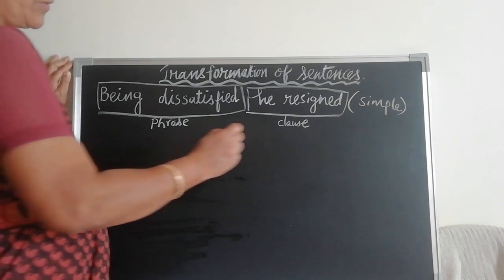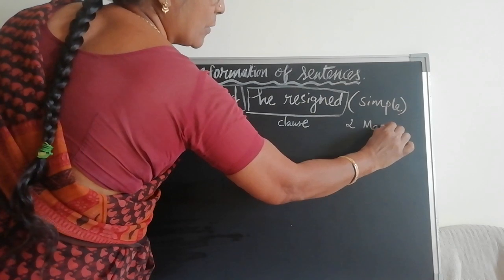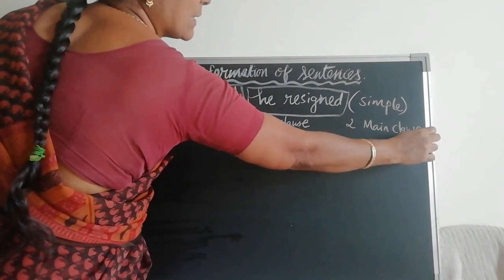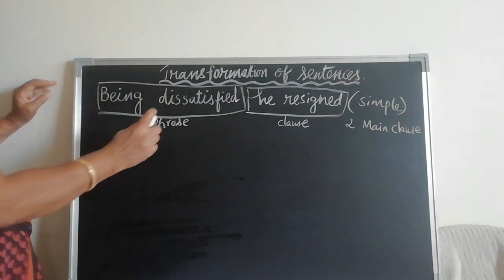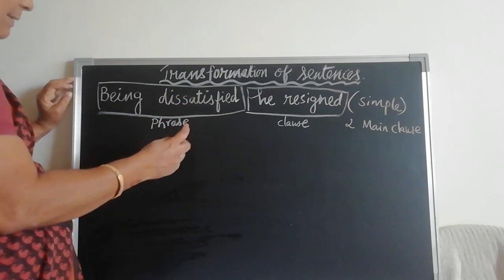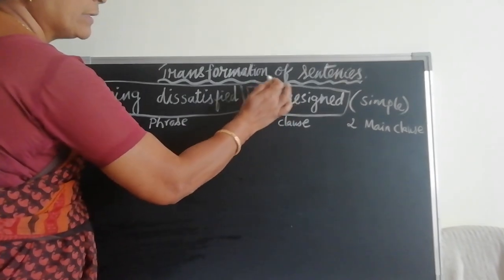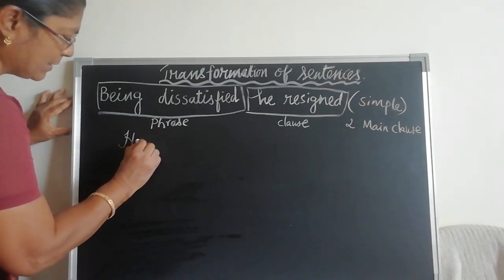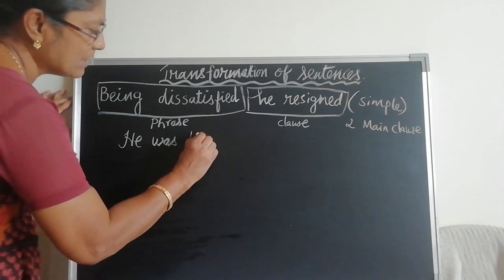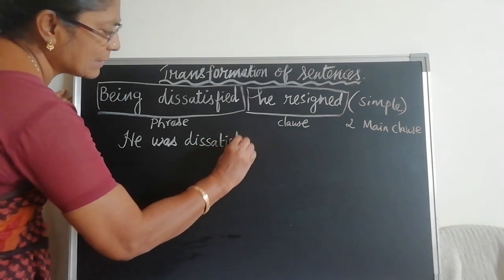We have to change it into a compound sentence. A compound sentence needs two main clauses. So I have to change this phrase into a clause. 'Being dissatisfied' — who is dissatisfied? He. So I have taken 'he was dissatisfied' — that becomes one main clause.